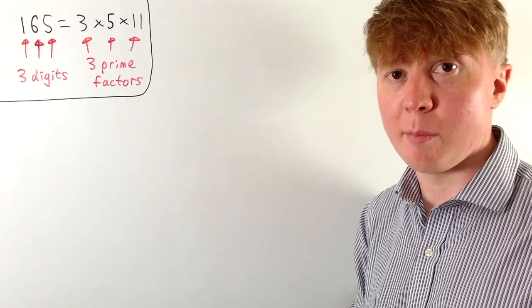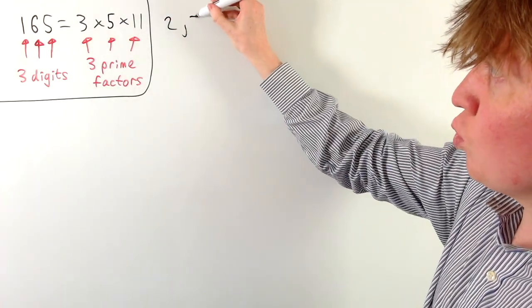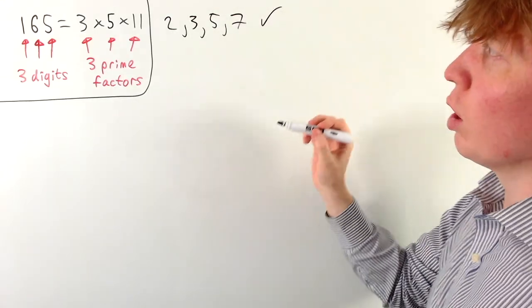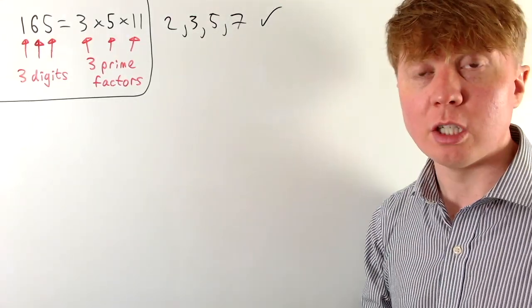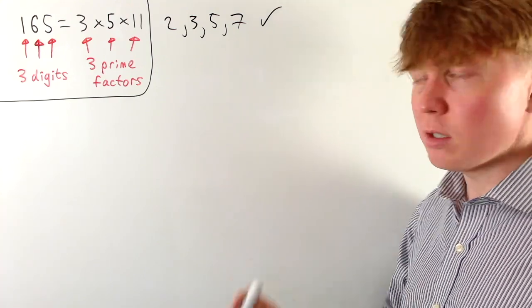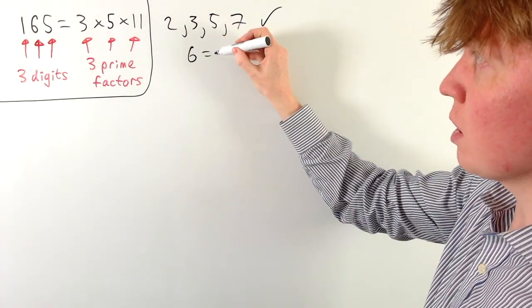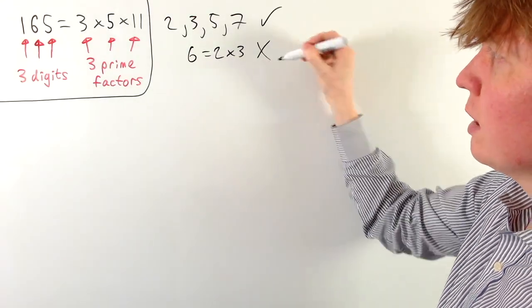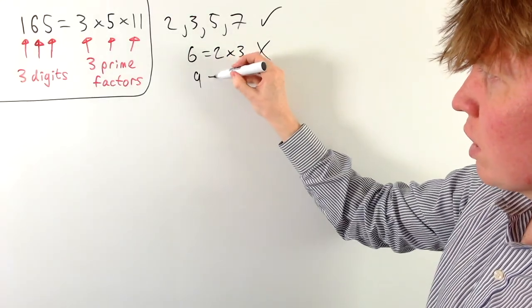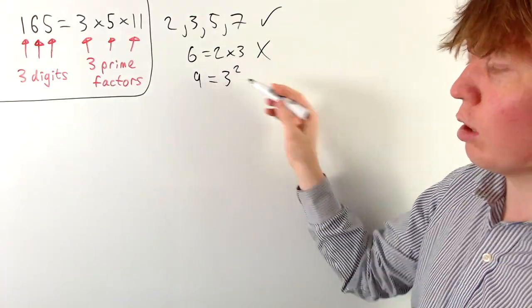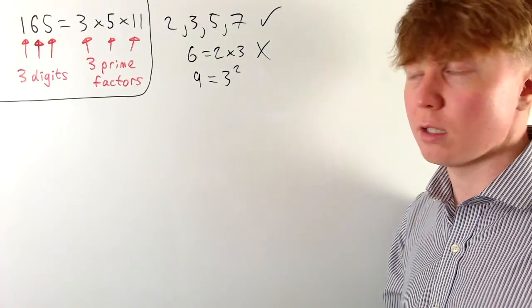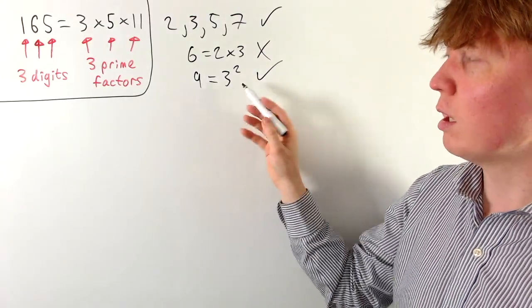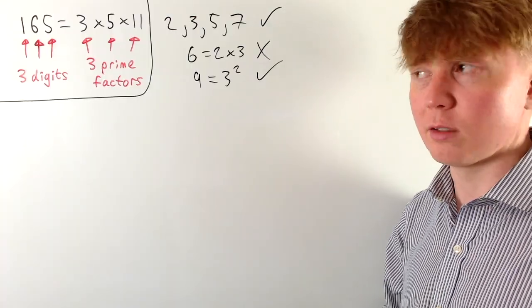Looking at one-digit examples, something like 2, 3, 5, or 7 — any one-digit prime number would work, since it has exactly one digit and exactly one prime factor. Something like 6 wouldn't work: 6 is 2 times 3, which has two prime factors but only one digit. However, 9, which is 3 squared, has only one prime factor repeated, so it counts — one digit and one distinct prime factor.